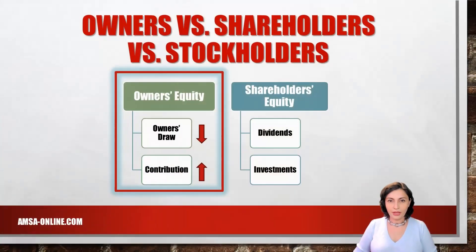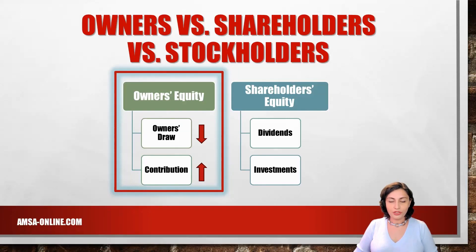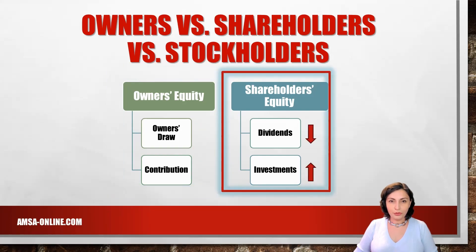If you refer to a sole proprietorship, the appropriate term is owner's equity, as there are no shareholders. Owner's or shareholder's equity is increased by credit and decreased by debit. When referring to owner's equity, decreases or debits are called owner's draw and increases or credits are called contributions. When referring to shareholder's equity, decreases or credits are called investments.